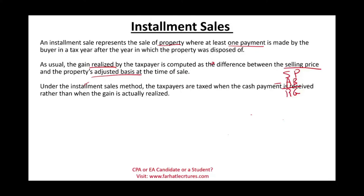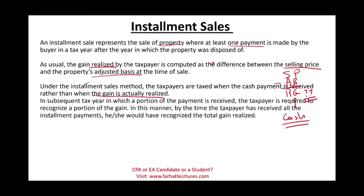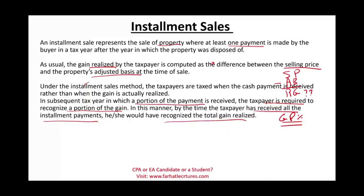Under the installment sales method, taxpayers are taxed when the cash is received rather than when the gain is actually realized. We pay taxes in proportion of the cash received based on the gross profit percentage. In subsequent years, as we receive a portion of the payment, the taxpayer is required to recognize a portion of the gain using the gross profit percentage. By the time the taxpayer has received all installment payments, he or she would have recognized the total amount of gain realized.